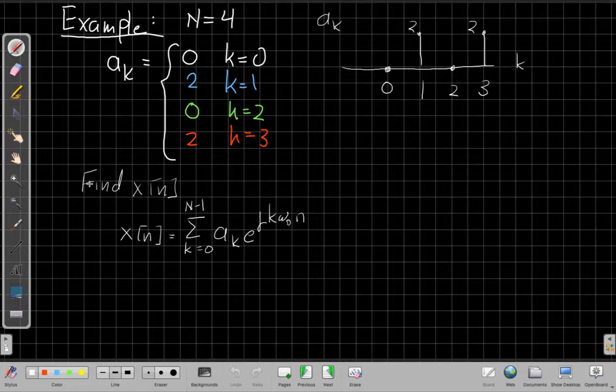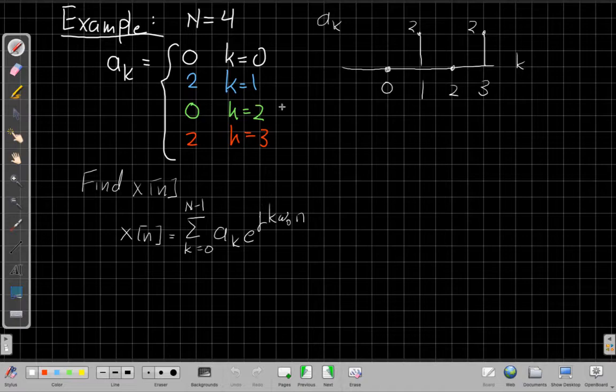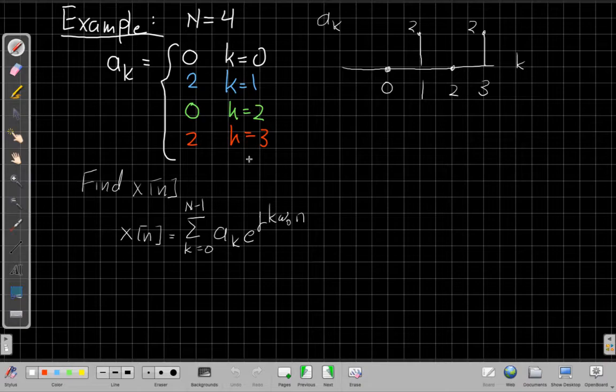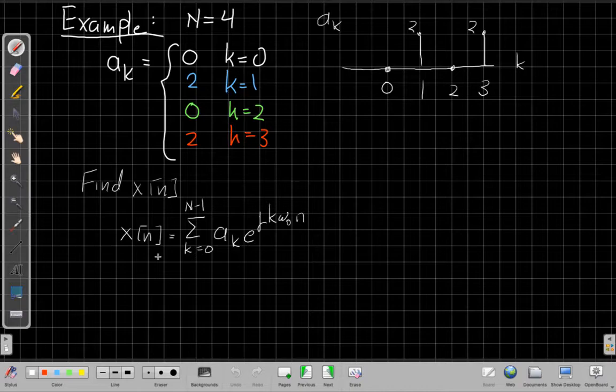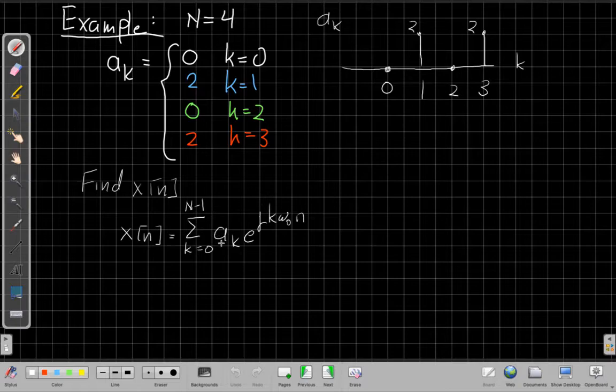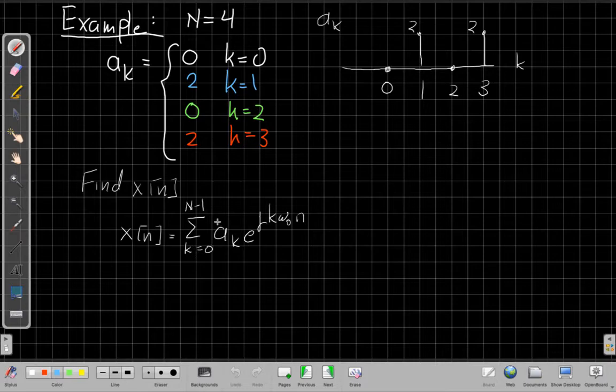So our goal here is to find x of n, the time domain signal. A sub k is like the recipe, saying what signal do we make if we bake our cake with two cups of the first harmonic and two cups of the third harmonic. In order to do that, we need a couple things. This is our generic Fourier series synthesis sum, which says the periodic signal x of n is going to be the sum as k goes from 0 to n minus 1 of a sub k as the weight times e to the j k omega 0 n.